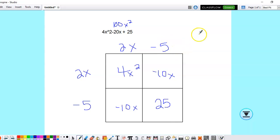And so then the factors that you would have would be 2x minus 5. And you can either do that again, or you can square this one. So it would look like this.